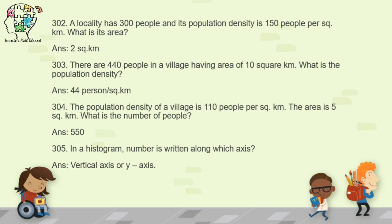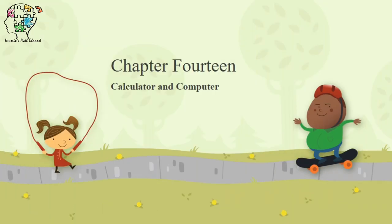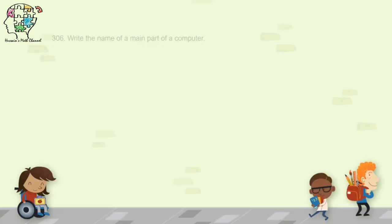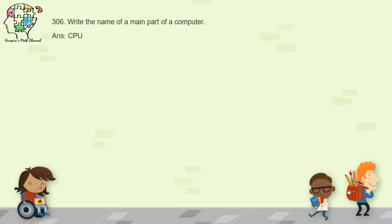This completes Chapter 13. Now we move to Chapter 14, which is related to calculators and computers. There are only a few questions remaining. Question 306: write the name of a main part of a computer. The main part is the CPU or monitor. You should not write keyboard or mouse, because a touchscreen computer can work without them. Writing CPU is the safest answer.